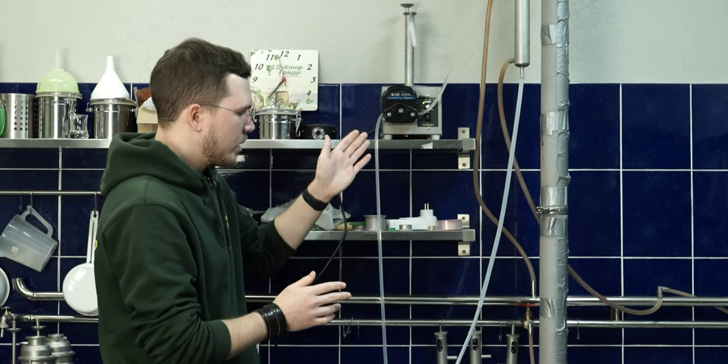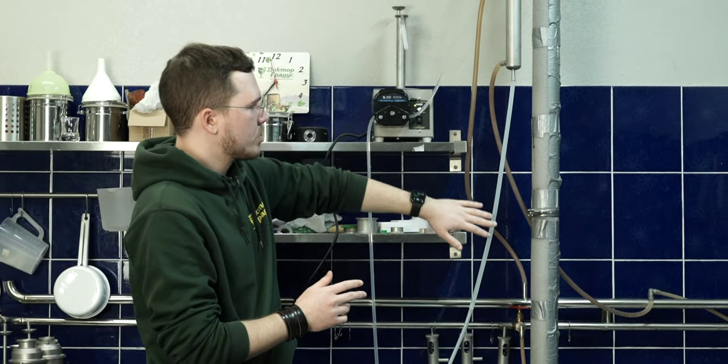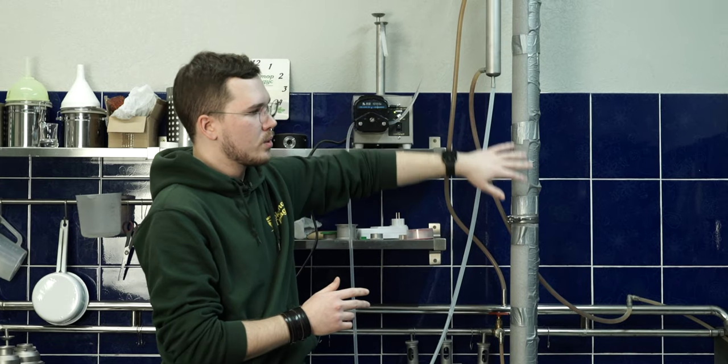Right now we're making continuous stills like this one, and this allows us to distill about 12 to up to 16 liters of mash per hour. That's not a lot, but it is a really nice device.